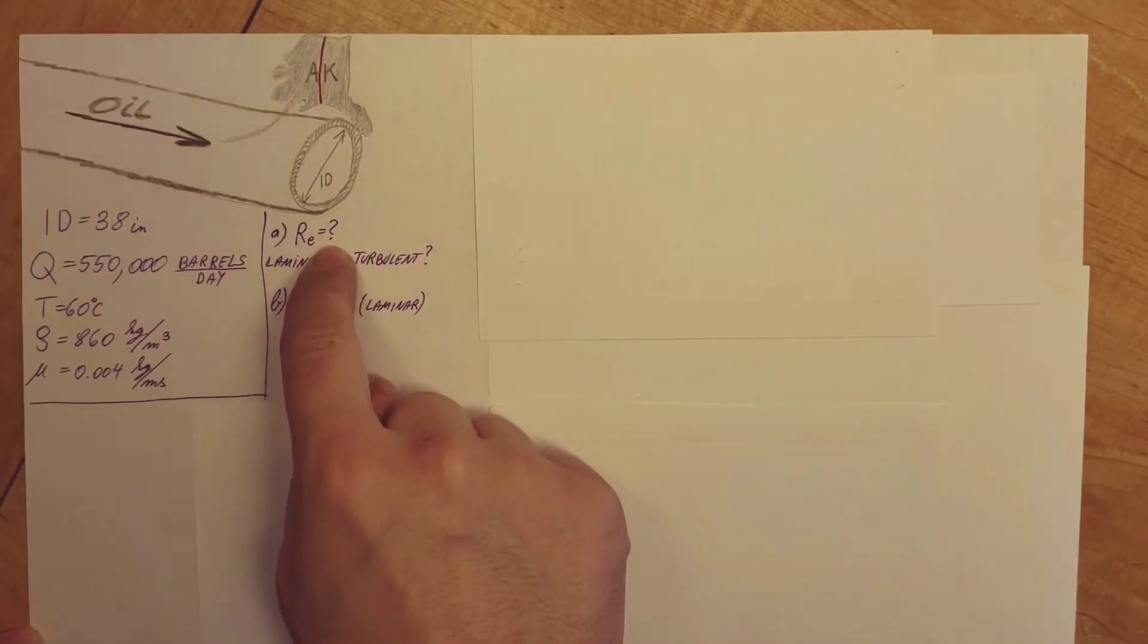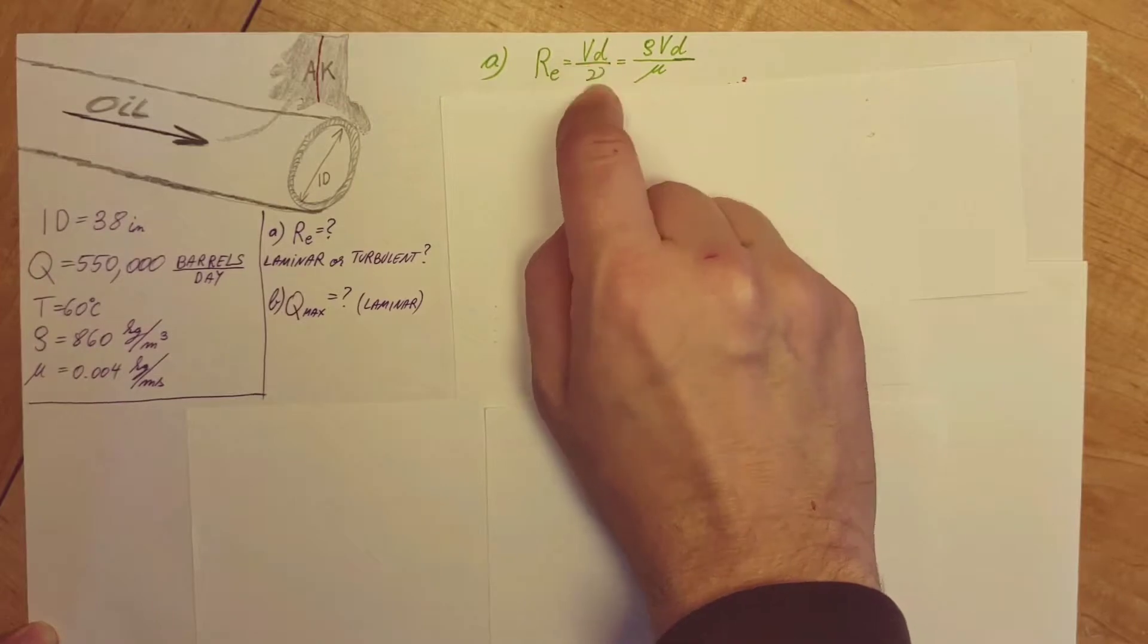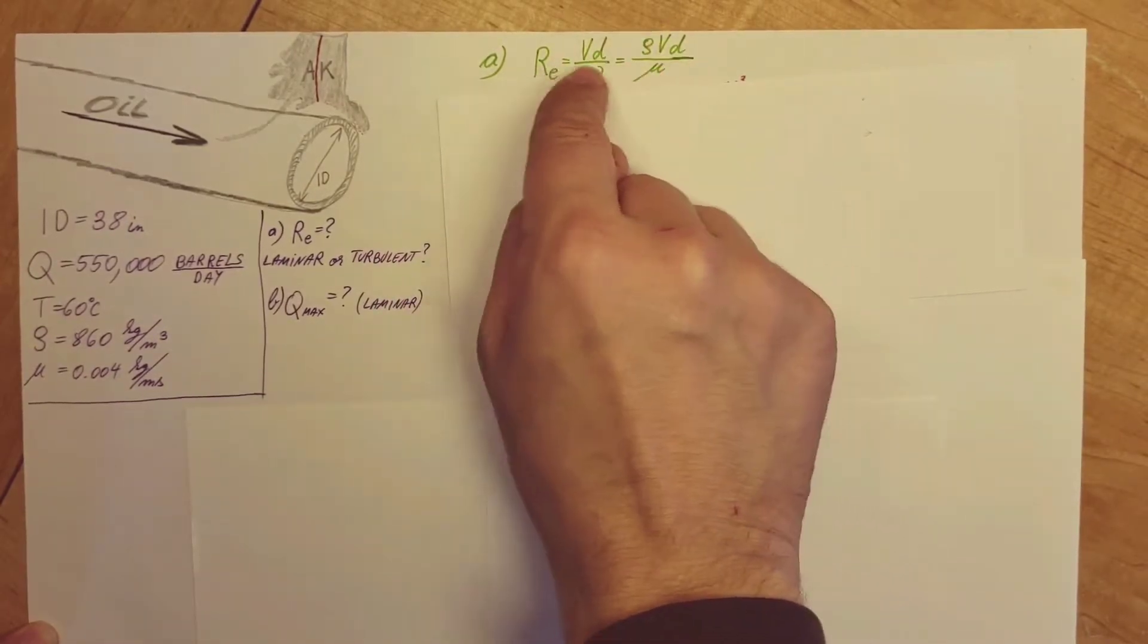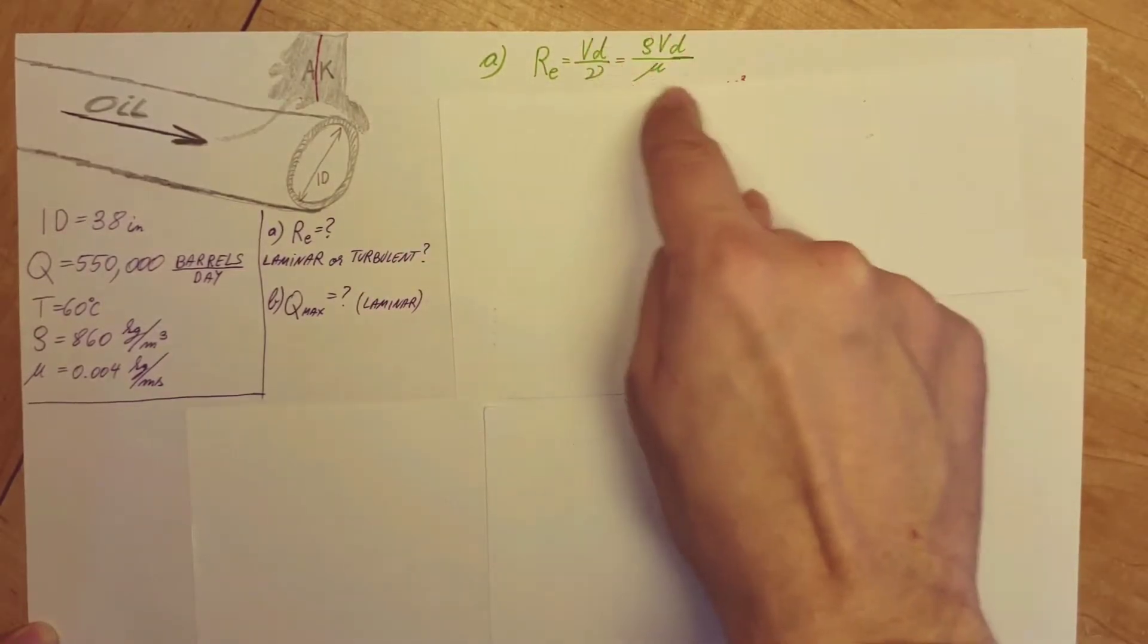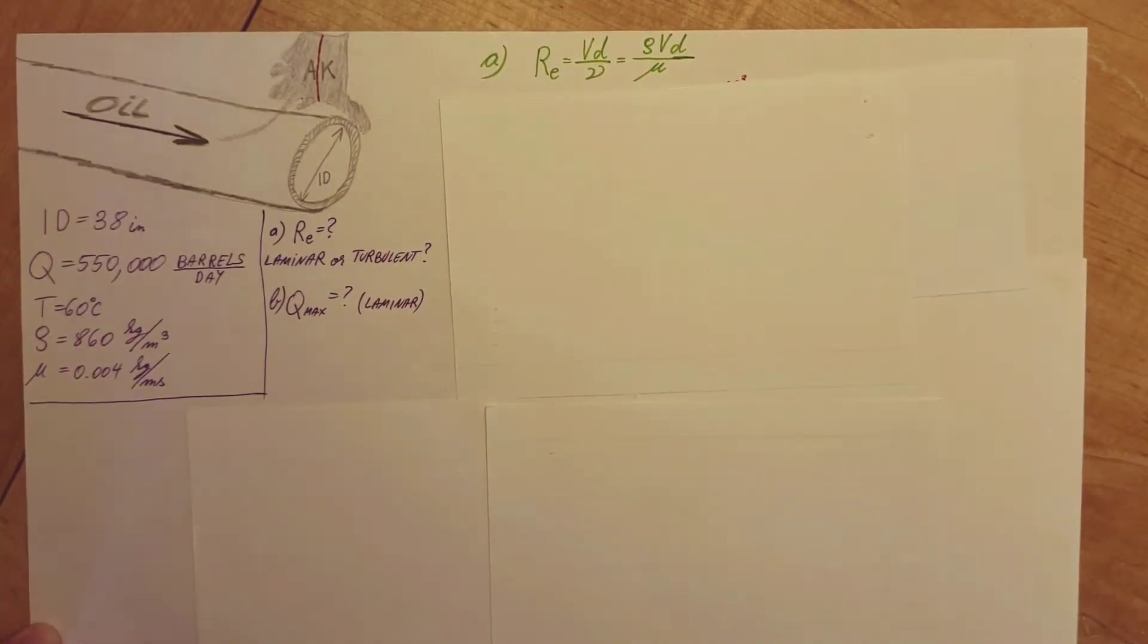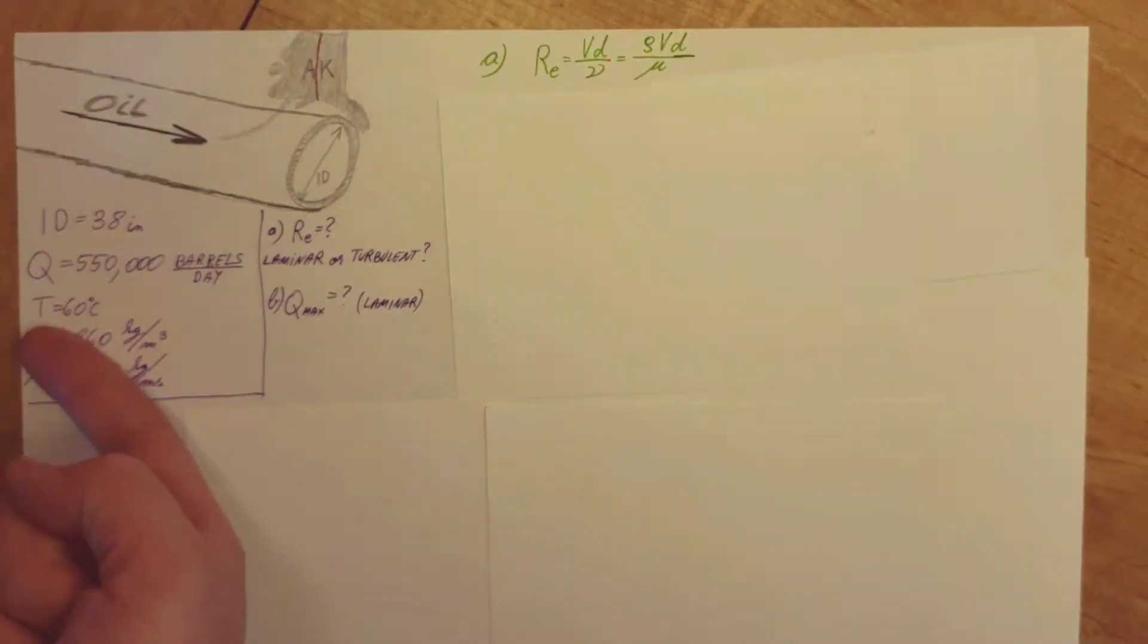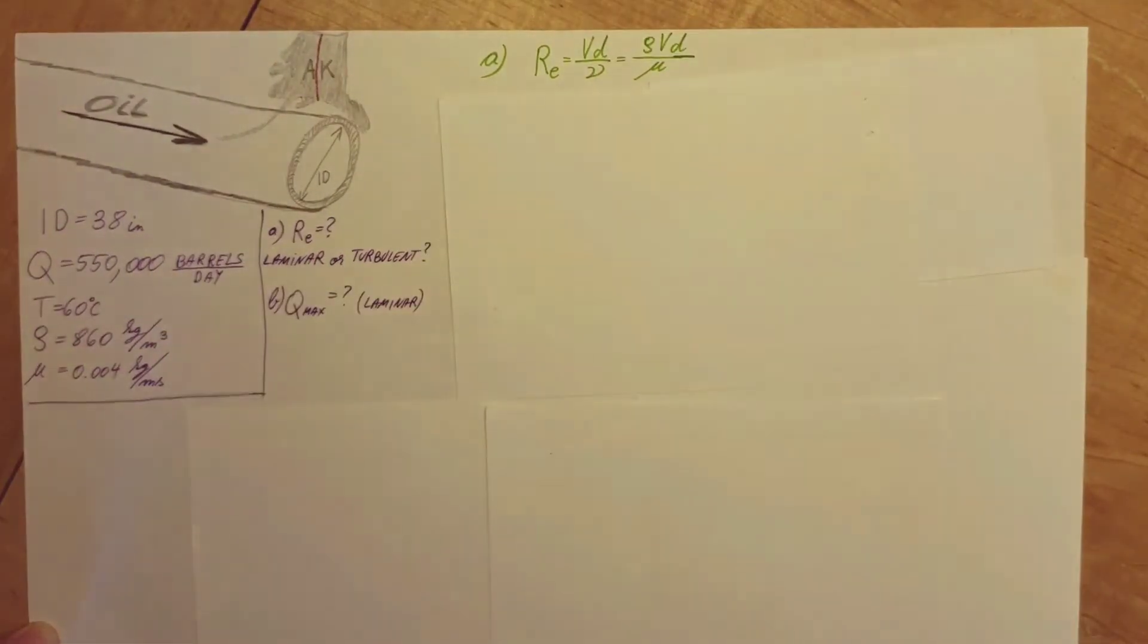To start, let's write up our Reynolds number formula, which is right here. Reynolds number equals velocity, diameter, and kinematic viscosity. Or we can break up kinematic viscosity into density and viscosity. Since we have these two given, we should work with this version of the formula. Let's see if we have everything we need for it. We have rho, mu, we have the diameter, but not the velocity. That's the only thing that we do not have.